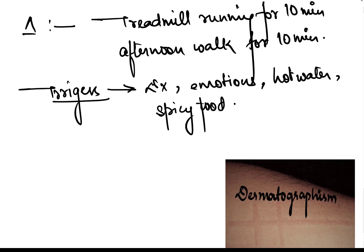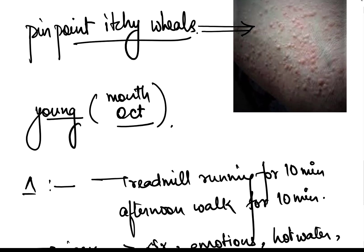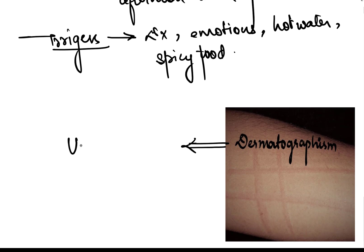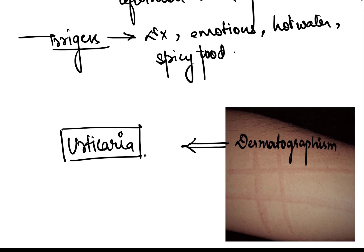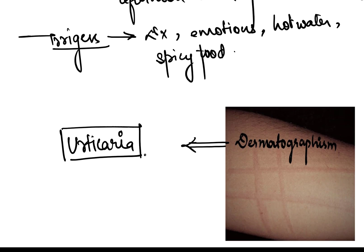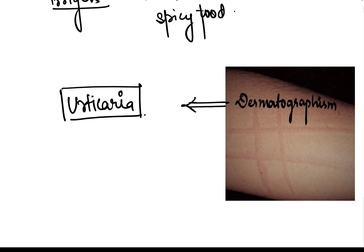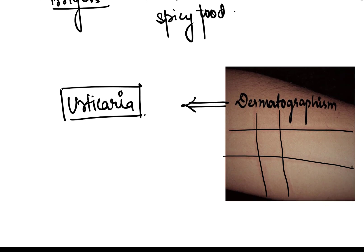These patients generally have pinpoint itchy wheals, but dermatographism is also one very important feature associated with most urticaria. Dermatographism is a feature of urticaria where if you take a blunt object and rub or scratch the skin of the patient, wheals appear along that line where you have scratched. This is known as dermatographism because you are able to write over the skin — 'derma' means skin and 'graphism' means writing.